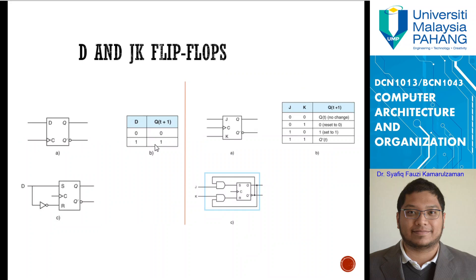We have another version, other versions as well, which are D and JK flip-flops. D and JK flip-flops also create the same function as what we have in the SR flip-flop. This is another variation, and you can see this is the truth table. And this is another truth table for JK flip-flop.